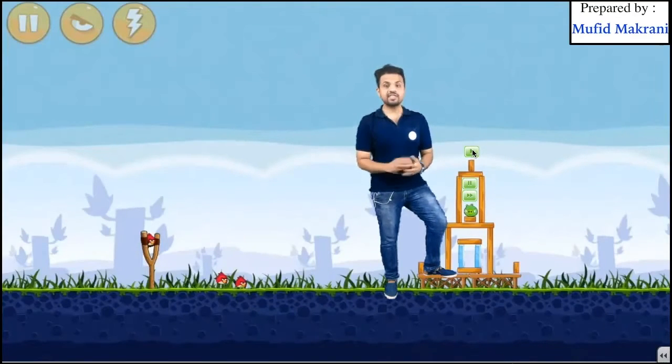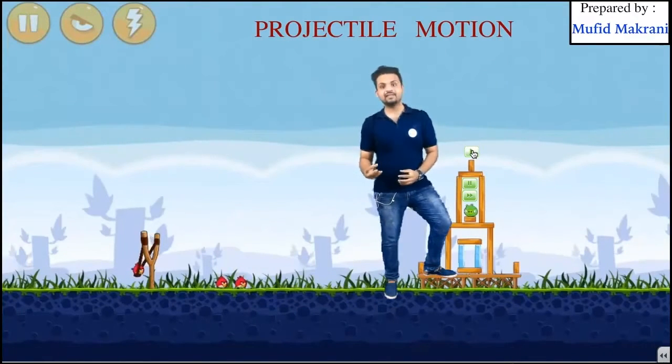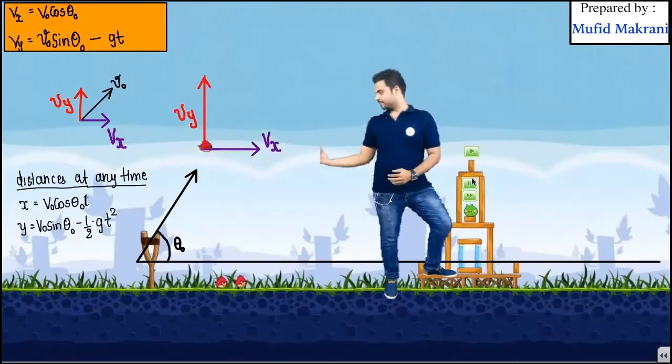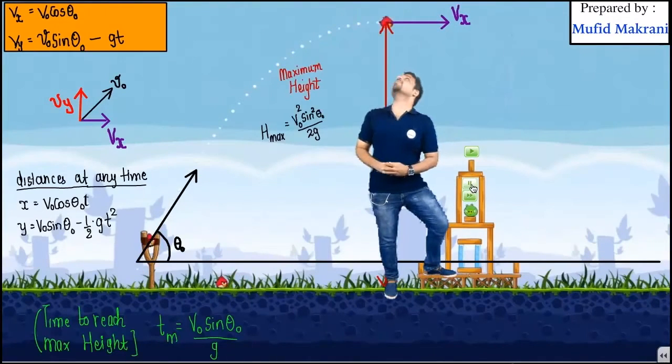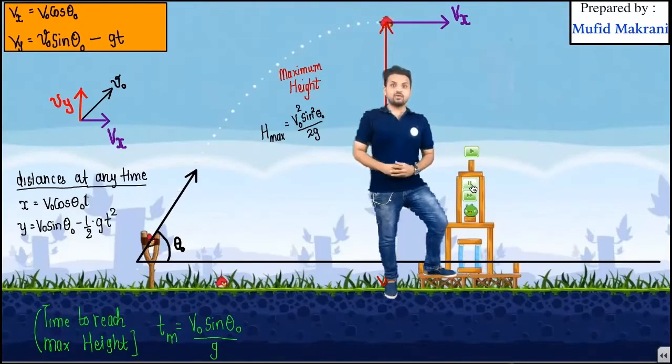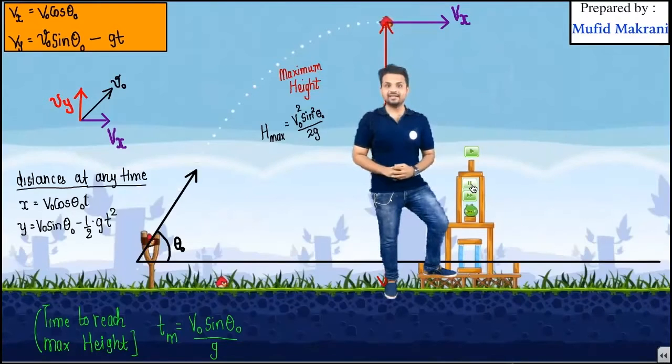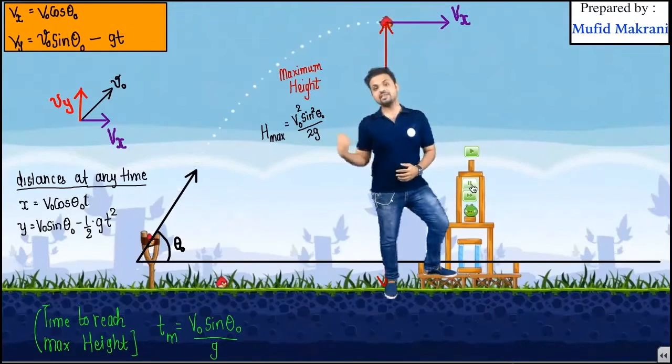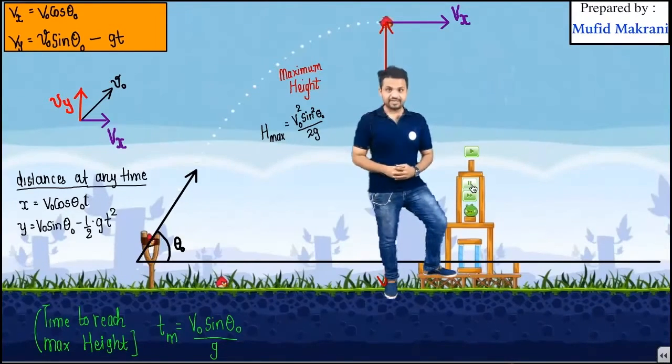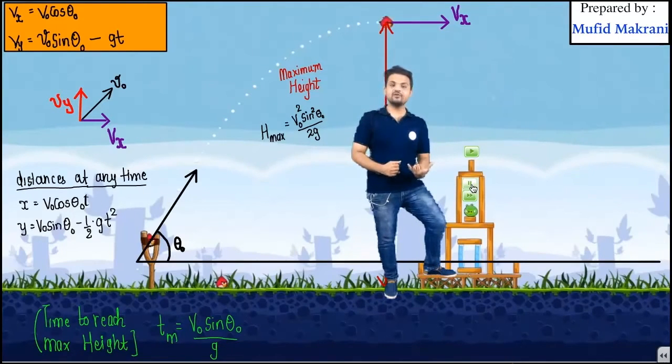Now we will be projecting the Angry Bird at some angle theta naught. Now it reaches its maximum height. Have you noticed the velocity of my Angry Bird is converted and it's resolved into two components: one is horizontal velocity vx and another is my vertical velocity vy.